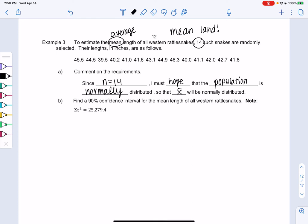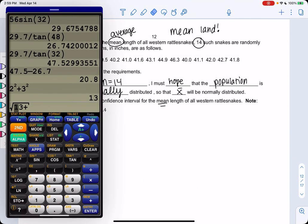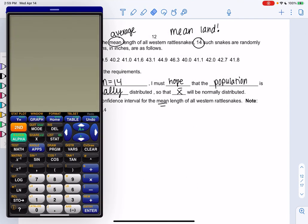So let's find a 90% confidence interval of the mean length of all western rattlesnakes. And then remember, this is just a way to check our work on the calculator, the sum of x squared. So pull out your calculator if you haven't already, and let's enter the data.